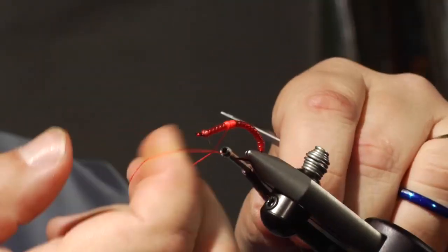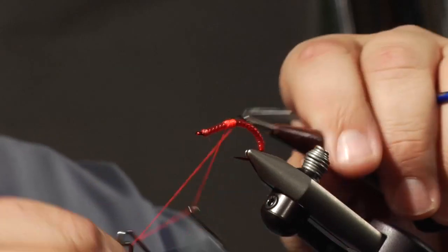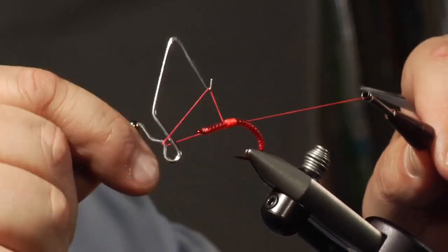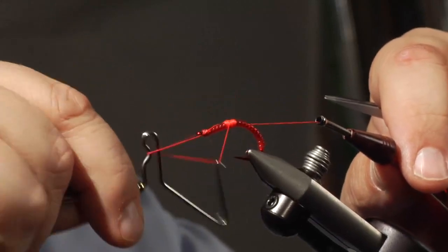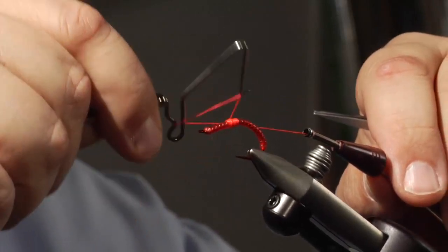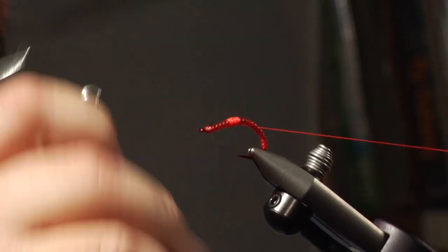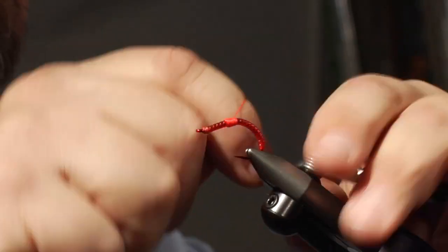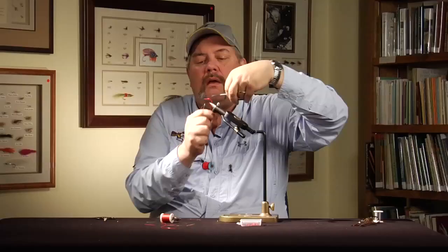It's really important to coat this really nicely with head cement. There's your hot spot. You come up and you whip finish back over the top of it. Pull that tight. Now it's always ready to go fishing. The fly is done.